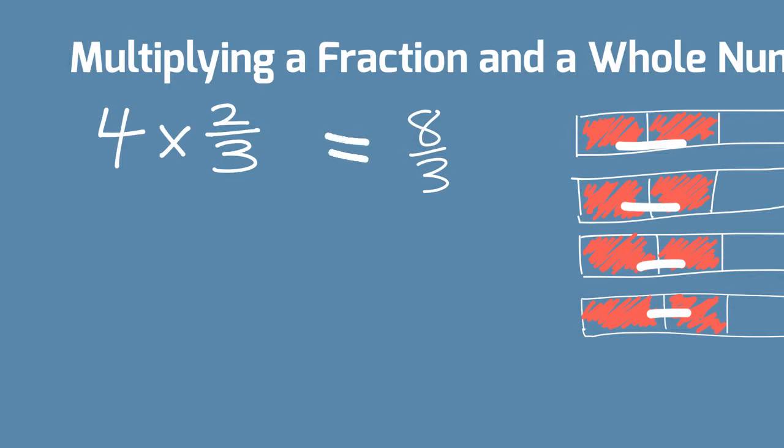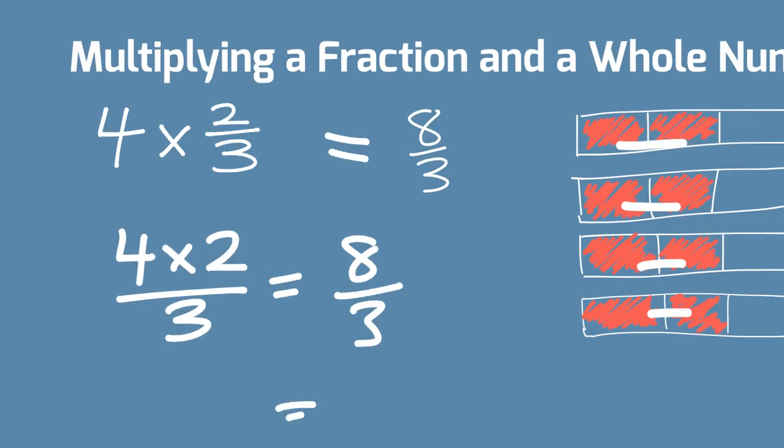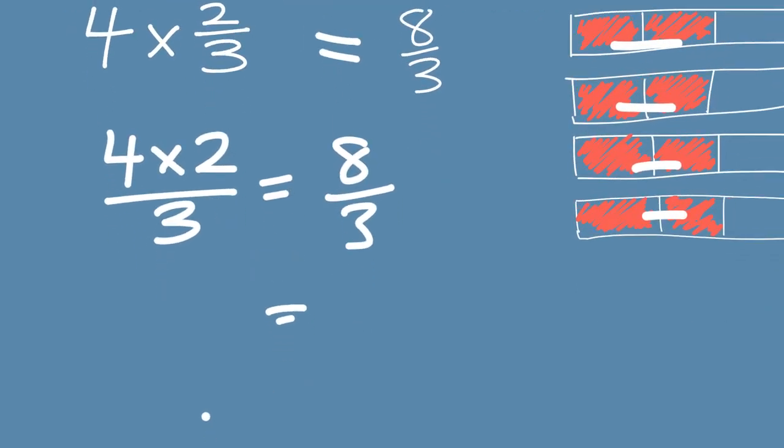So, we can rewrite this problem as 4 times 2, whole number, times the numerator, all over the denominator, which is 3. 4 times 2 all over 3. And yes, what do we get? 4 times 2 is 8 over 3. We know that is improper, so we can clean that up as 2 and 2 thirds.